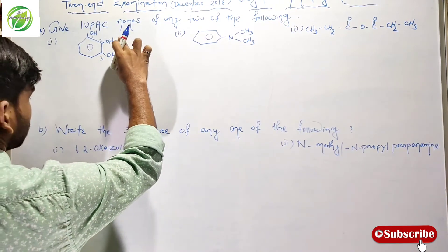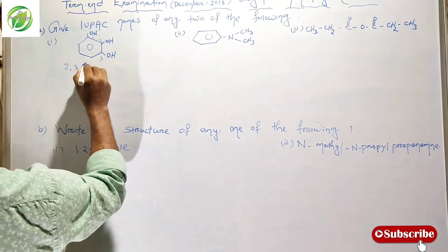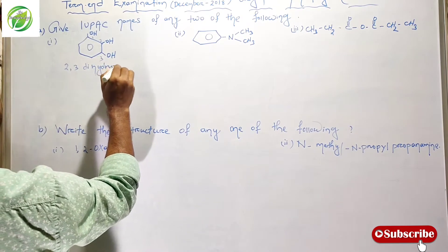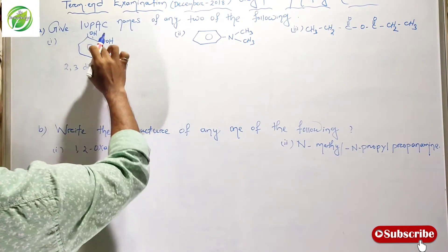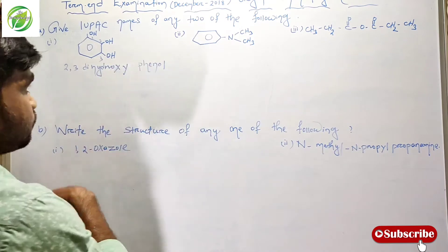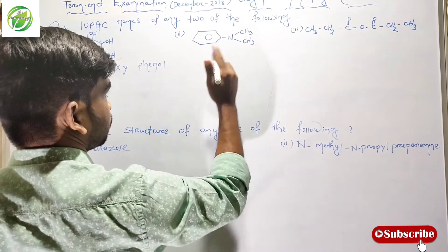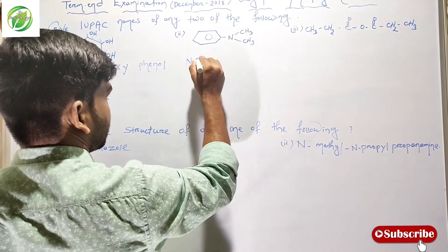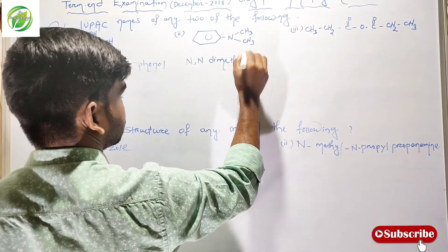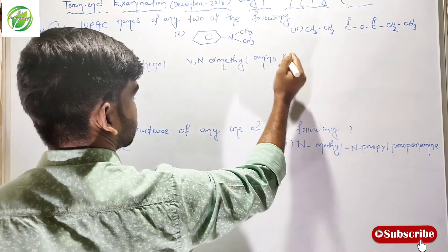For the 2-OH group, we express that as hydroxy at position 2. And we have N,N-dimethylamino benzene.